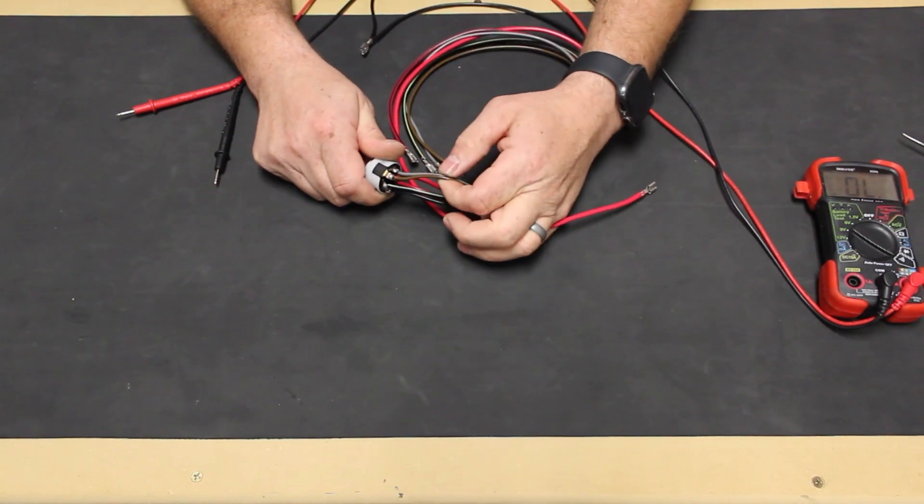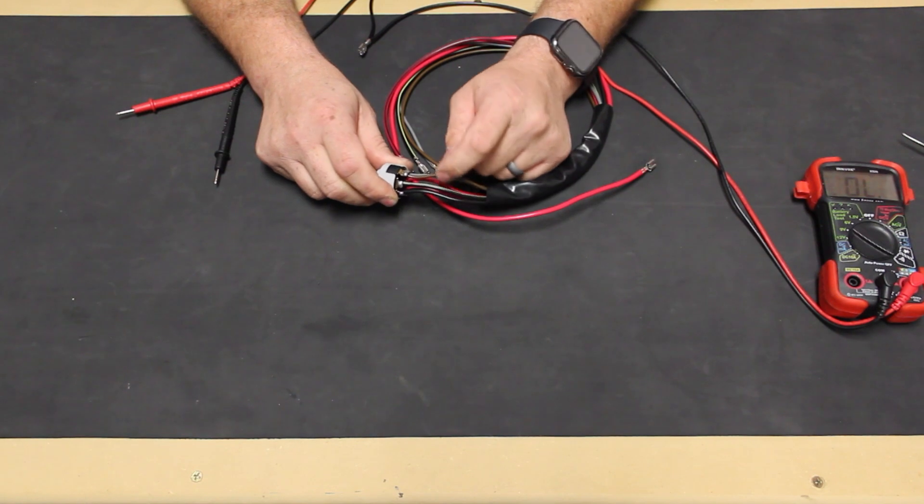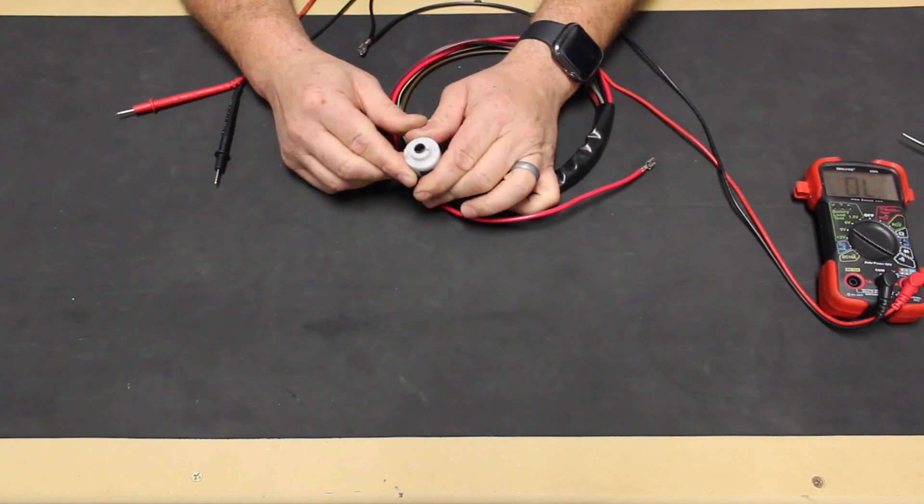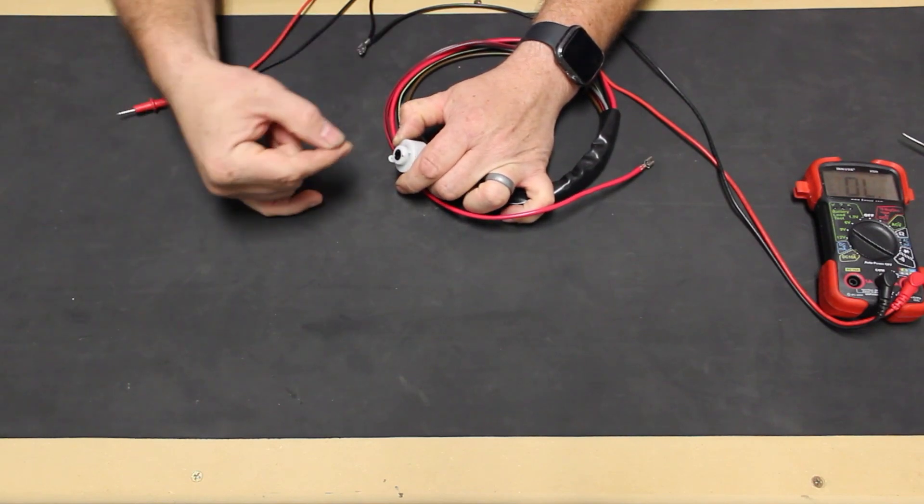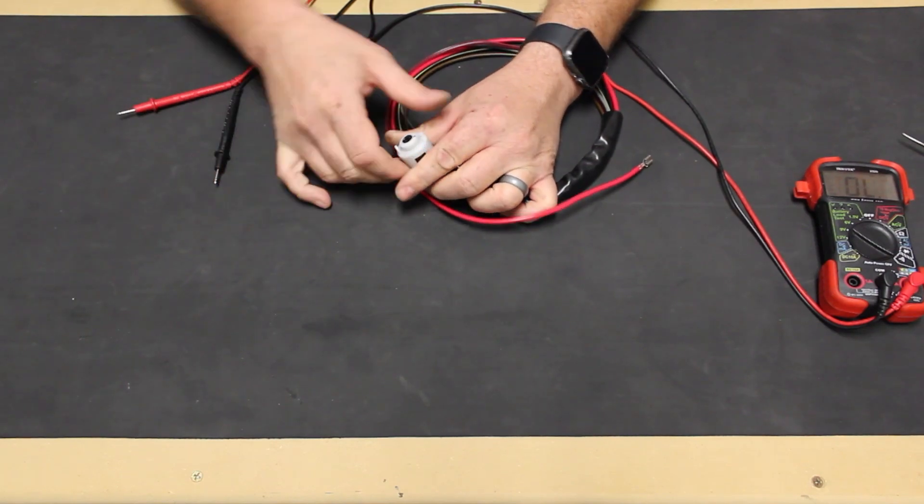Additionally, we have two other wires, a brown and a gray one, which are used for the ignition buzzer. That is that little sound that reminds you that you left your key in the ignition when it's at the off position and the door is open.